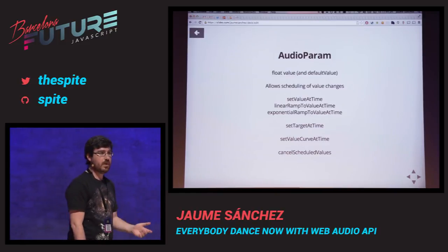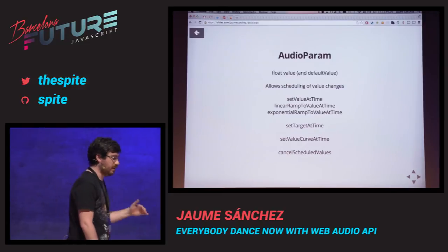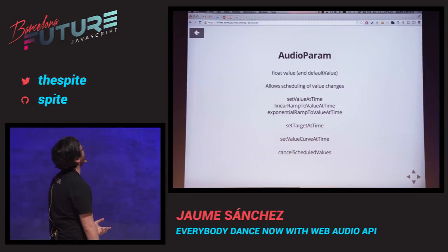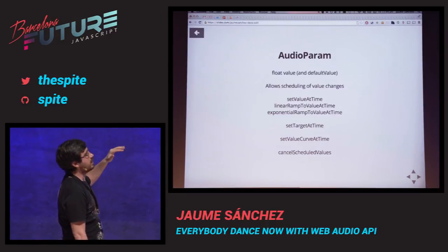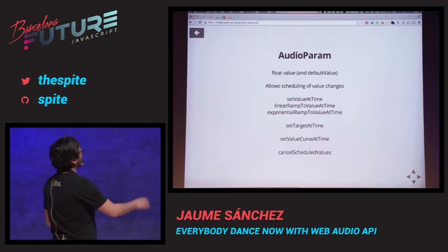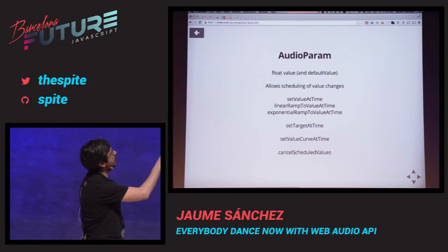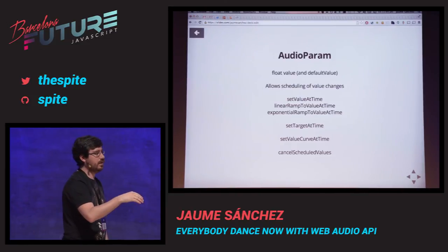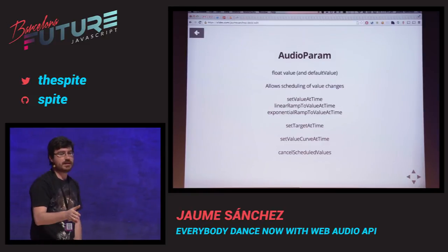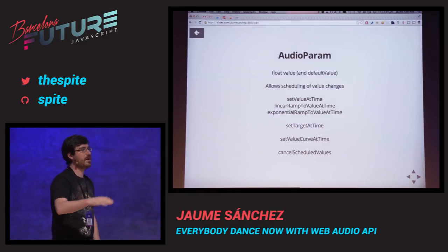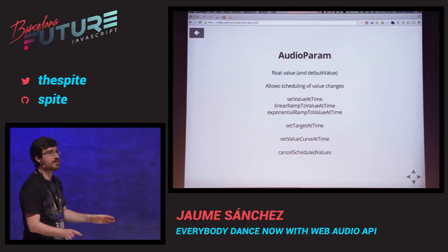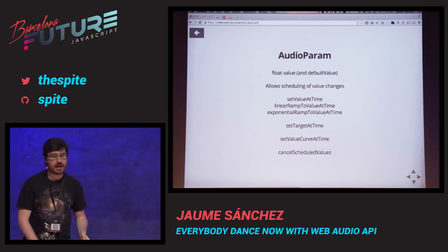There's linearRampToValueAtTime — you can say, whatever it is now, I want it to go to zero in five seconds, which is kind of a fade out. So please, if you implement mute on your web pages, fade them down — fade the sound in and out. An abrupt cut creates a click artifact. LinearRampToValueAtTime is linear interpolation, exponentialRampToValueAtTime is a curve. Then there's setTargetAtTime, which is more like a falloff — I don't care about the time, just approach that value at this rate. And setValueCurveAtTime lets you specify certain values, while cancelScheduledValues removes all scheduled events.